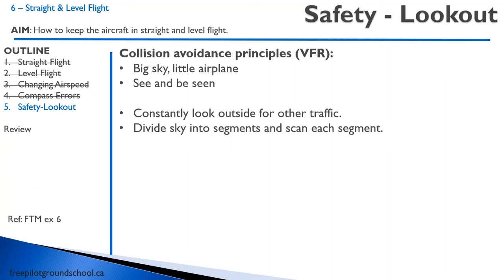Let's talk about a safety principle to conclude this lesson: collision avoidance. When we're VFR, we call it 'big sky, little airplane' — see and be seen. You will be flying in uncontrolled airspace where there is no positive control by air traffic control, so the chance of hitting another aircraft is very small. However, it is irresponsible not to see and be seen. Using lights strategically can help. When looking for other traffic, you should be constantly looking outside — it's a bad habit to stare at instruments while flying VFR. Divide the sky into different segments and scan each segment, looking for aircraft.